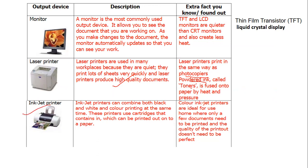Inkjet printer: these combine both black-and-white and color printing. These printers use cartridges for printing on paper. Color inkjet printers are ideal for home use where only a few documents need to be printed and print quality is not a very high concern.